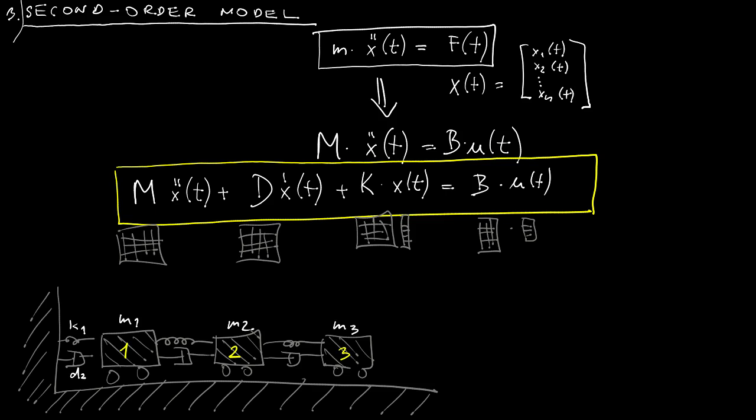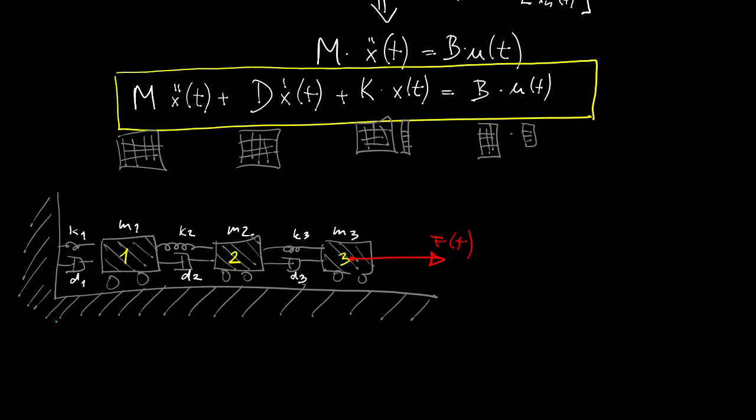And the corresponding stiffness and damping coefficients are k1, k2, k3, d1, d2, d3. And the rightmost object is exposed to an external force. The motion is positive to the right.